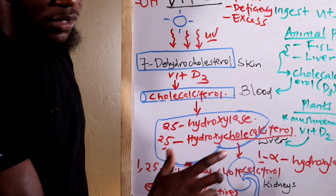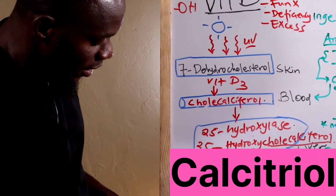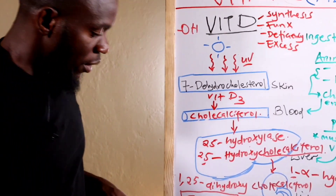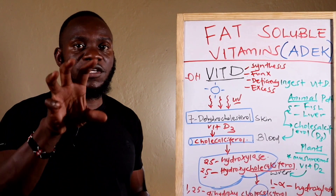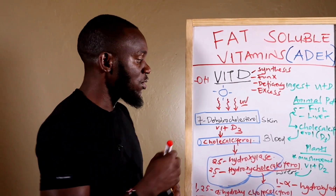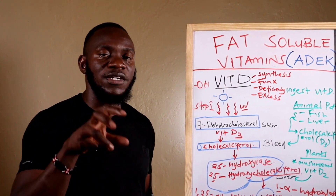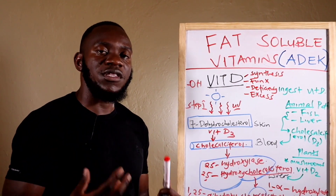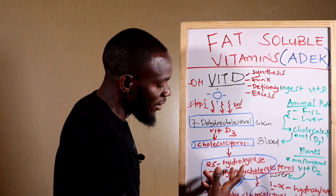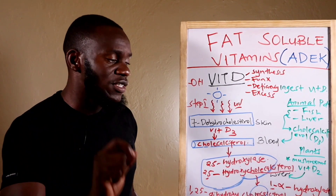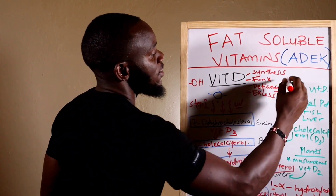Don't worry too much about the chemical names — just understand that the active form of vitamin D is calcitriol. To summarize the synthesis: cholesterol (7-dehydrocholesterol) in the skin is activated by UV radiation, then converted further in the liver, and finally activated in the kidneys to form calcitriol, the active form of vitamin D.